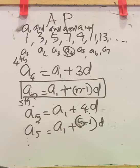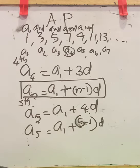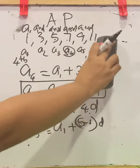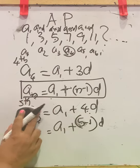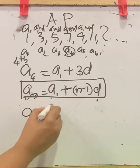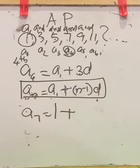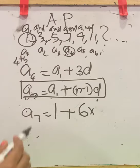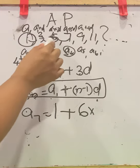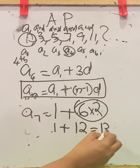If we don't know a particular term, we use this formula. We need to know the first term and the common difference to find the number at that term. For example, using the sequence 1, 3, 5, 7... if the seventh term is missing, A7 equals A1 plus (7 minus 1) times D. A1 is 1, 7 minus 1 is 6, and D is 5 minus 3 equals 2. So 1 plus 6 times 2 equals 1 plus 12 equals 13 — the seventh term is 13.